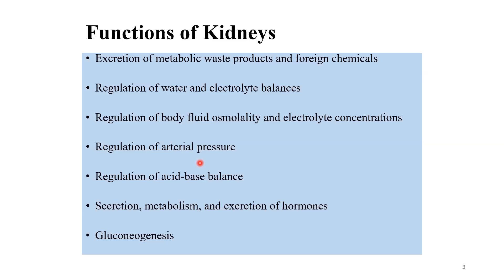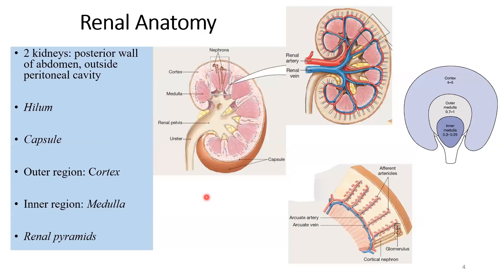The same goes for acid-base balance. You have buffers and mechanisms to resist changes in pH, but it's the kidney which brings the whole thing back to normal when the chips are down. Really, it's the long-term, robust, stable changes that the kidney brings about in the body, and that's why one of the most detailed descriptions in homeostasis is that of this particular organ.